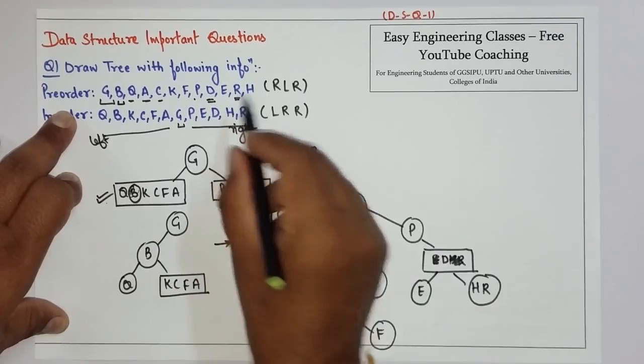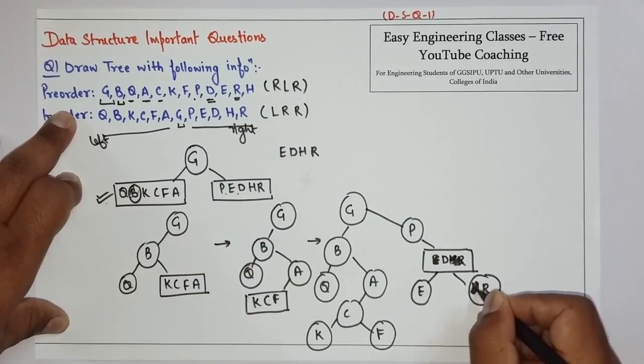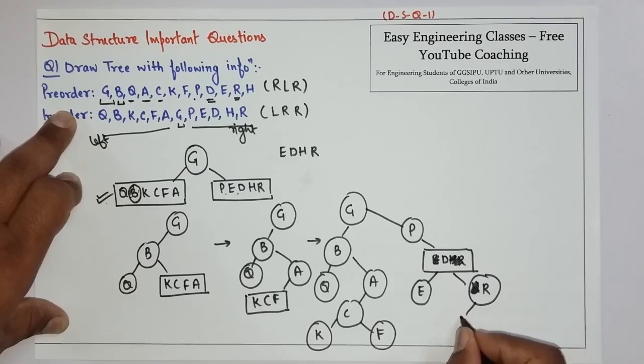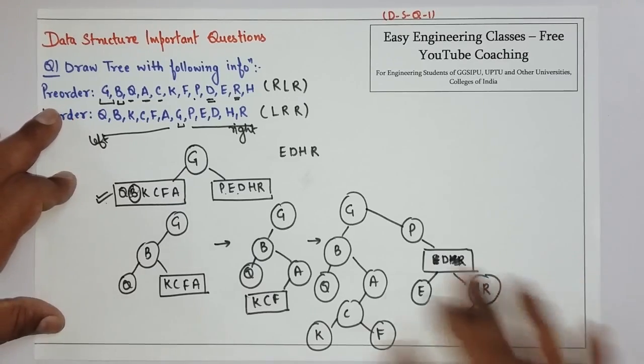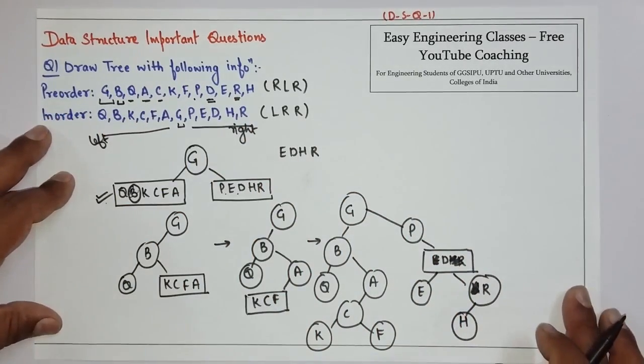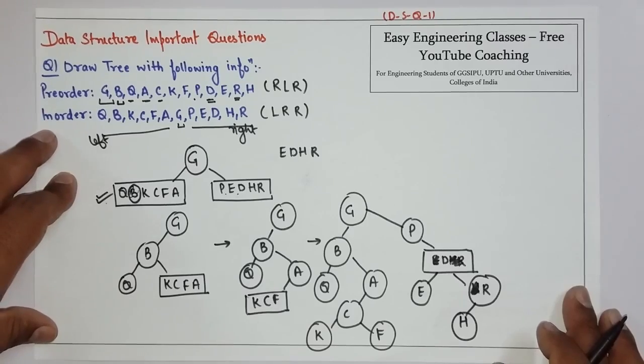From this, R occurs first, so R is the root, and H will be on the left.